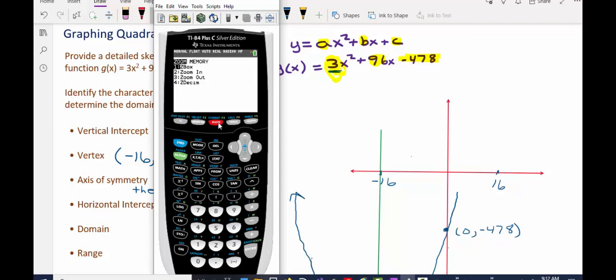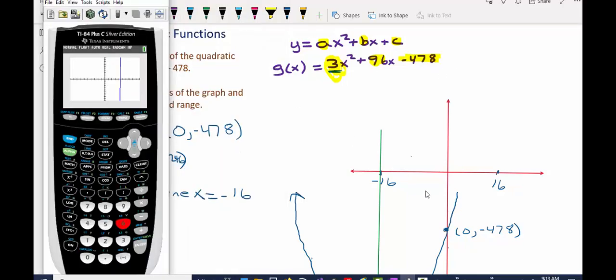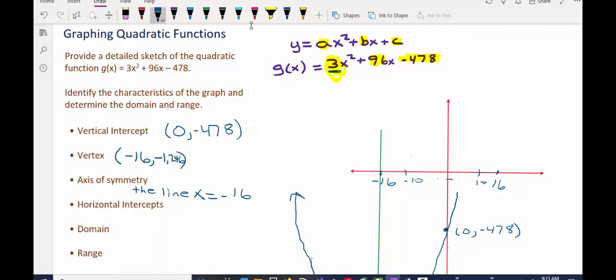In fact, if you were to press zoom and then number 6, you'd be graphing in a standard window between negative 10 and 10 on the x-axis and negative 10 to 10 on the y-axis. And if I was to look over at my axis here, negative 10 to 10 on my y-axis would be really, really small, so we're looking in this region right here.